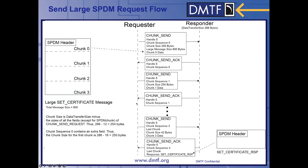This repeats itself until the very last chunk. At the very last chunk, an optimization occurs. After receiving the last chunk, the responder can send the set certificate response along with the response to that chunk in one payload. As you can see, the chunk send ACK has the response to the large set certificate embedded in itself.